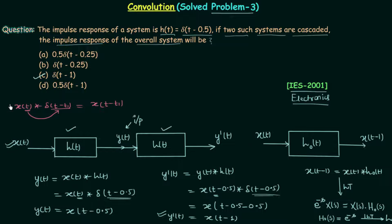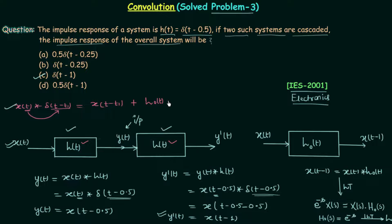You can see how much calculation was involved when using only one property. Now I will show how much the calculation reduces if we also know the associative law of convolution. Whenever you cascade two or more systems, the overall impulse response equals the convolution of the respective impulse responses. So if both systems have impulse response h(t), the overall impulse response h₀(t) equals h(t) convolved with h(t). This was our prime aim.